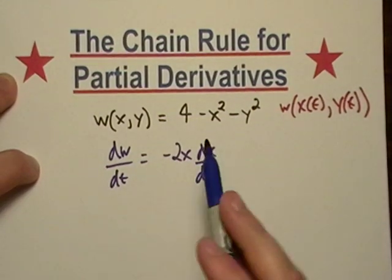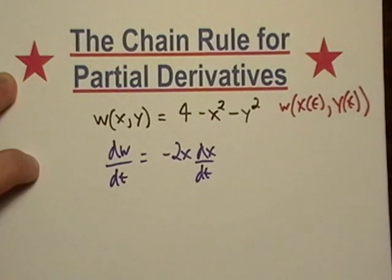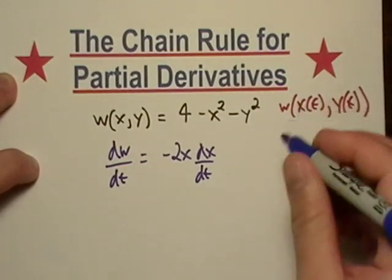But I'm also going to write dx/dt next to it because t is the independent variable. This is almost exactly like implicit differentiation that you did in Calc 1. It's really not much different at all.